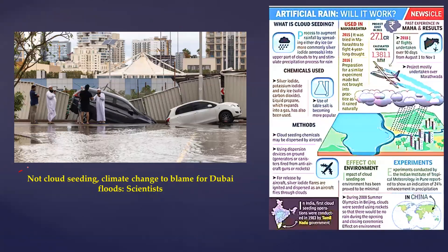There was news connecting Dubai flooding to cloud seeding, but remember — climate change is primarily to blame for the Dubai floods, not just cloud seeding. India's first cloud seeding operations were conducted in 1983 by the Tamil Nadu government. In 2015, it was done in Maharashtra to end a four-year-long drought. These kinds of experiments continue to happen.